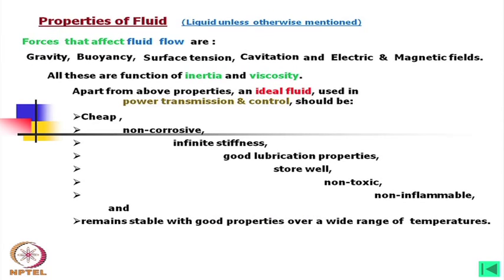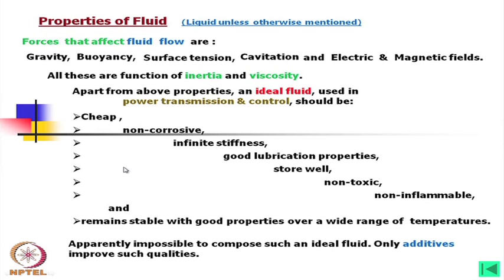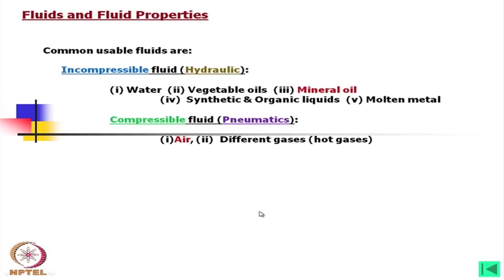Temperature is another important factor — with temperature change, many properties of oil will change, and therefore there will be change in performance, particularly where we need very accurate control. It is apparently impossible to compose such an ideal fluid. However, additives can improve such qualities.